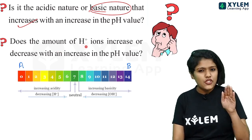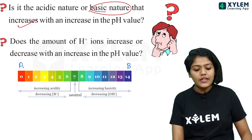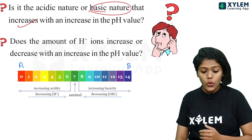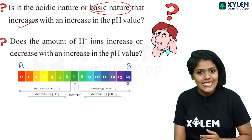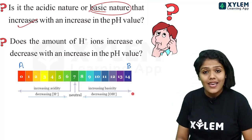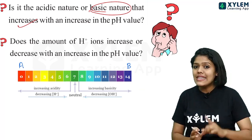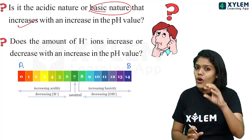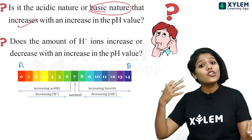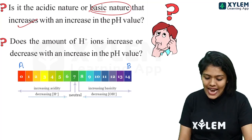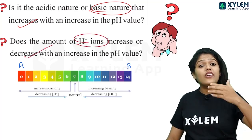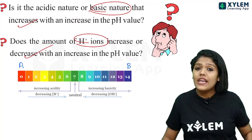The next question: does the amount of H+ ions increase or decrease with an increase in pH value? As pH value increases, the H+ ion concentration decreases. So we can say that H+ ions decrease while pH value increases.